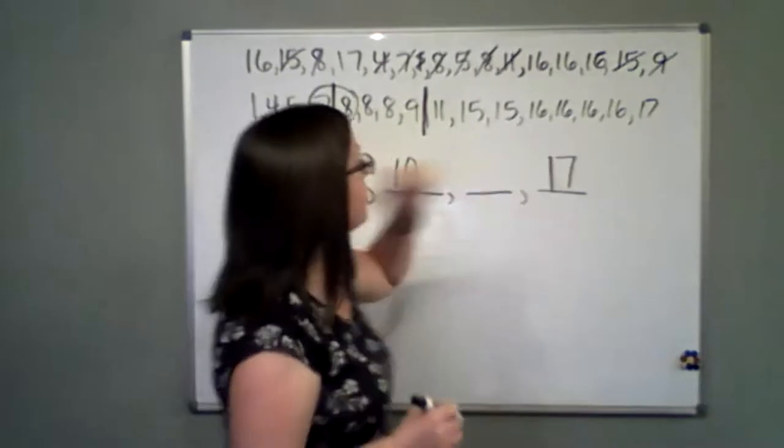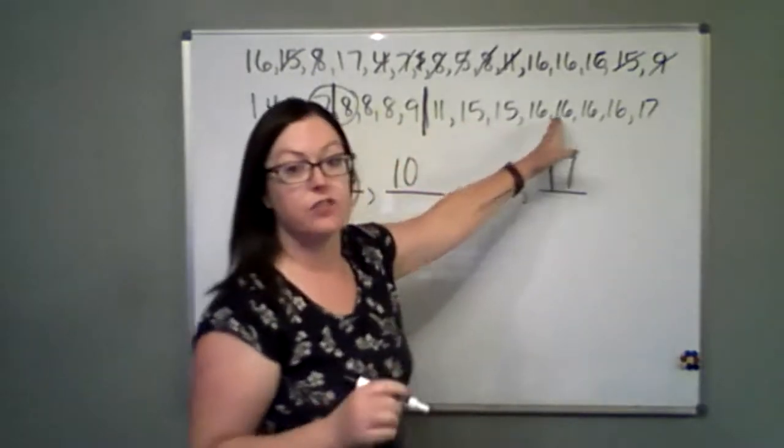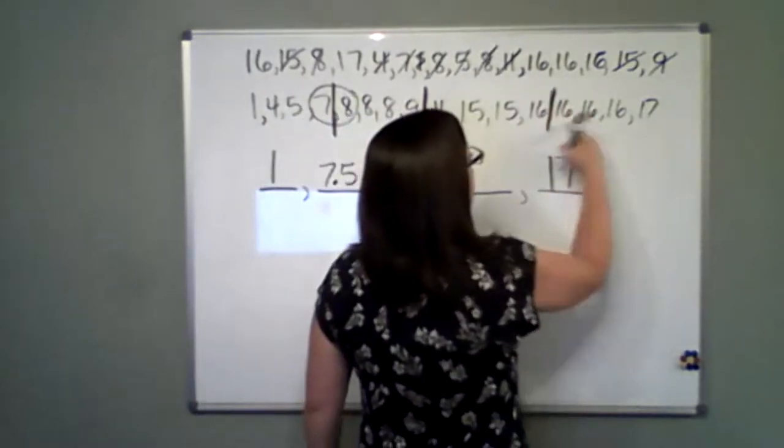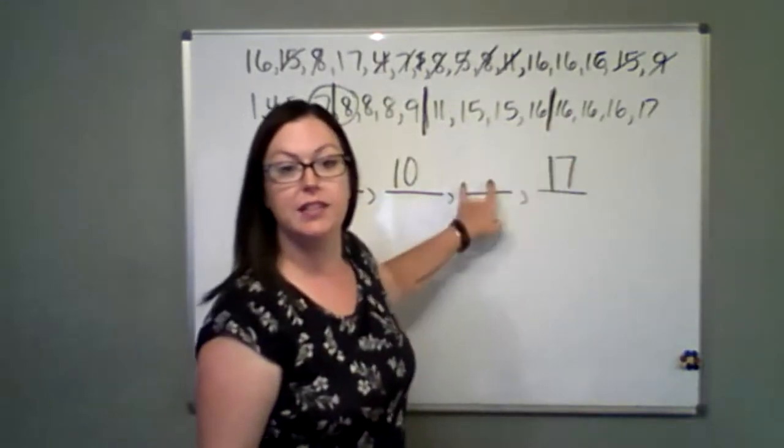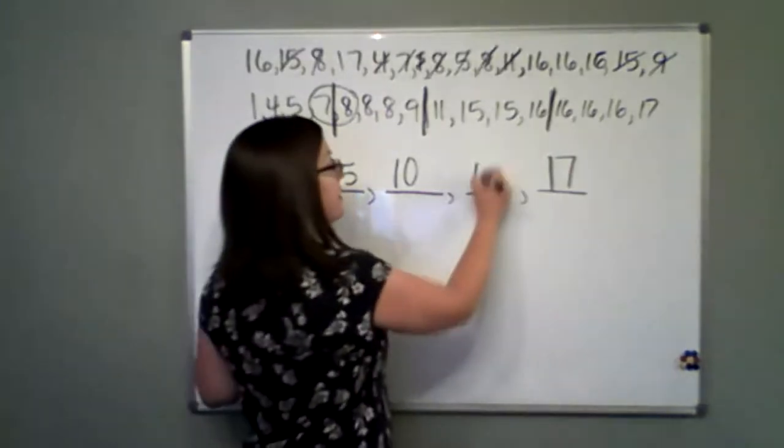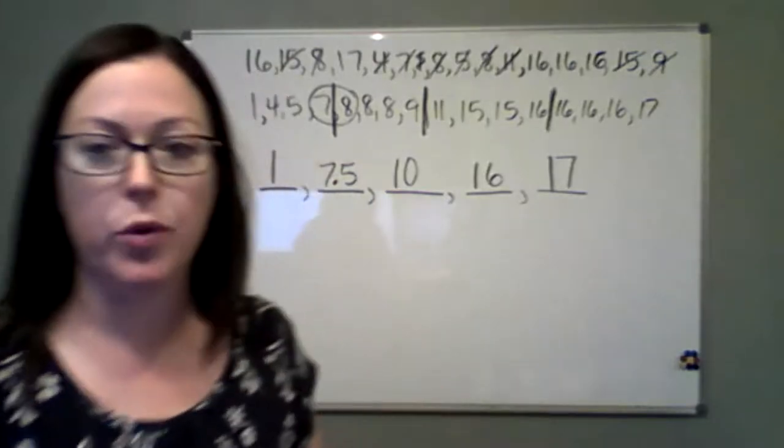And so now we go up here and we find, well, half of eight is four. So I need four numbers on the left of that, four numbers on the right. Well, the middle is shared by two 16s. So what's our Q3 going to be? So would it be 16? Yeah, it would just be 16. So this is your five number summary.